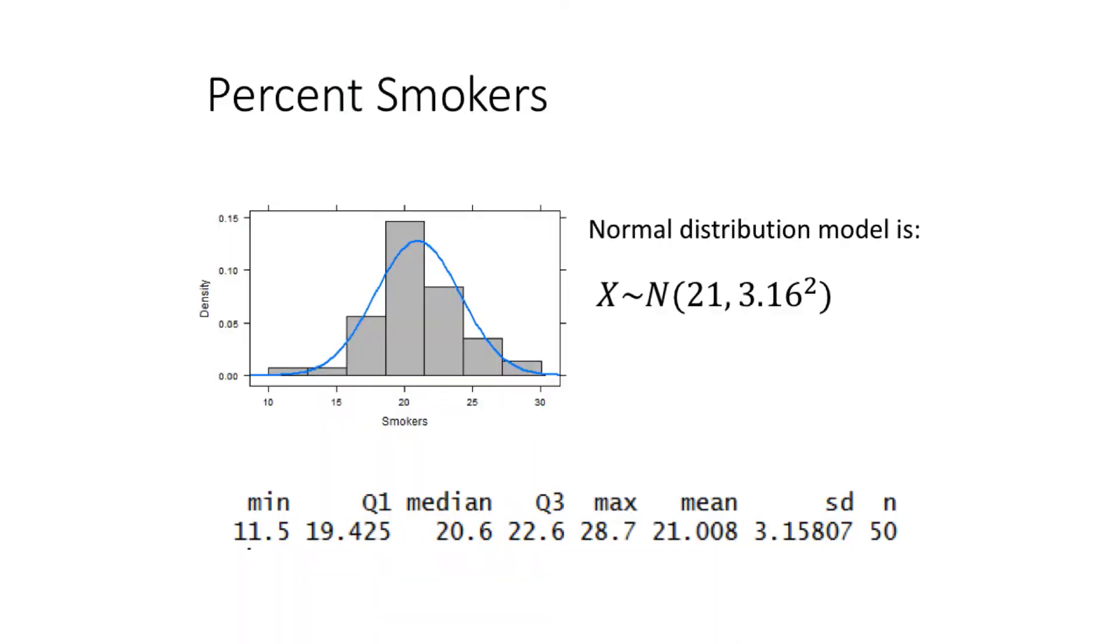So let's look at percent smokers. Here we have the normal distribution model. It's given by a mean and it's given by a spread. An important point here is that that blue line, that curve, that's the normal distribution model. That histogram is the actual distribution in our data.